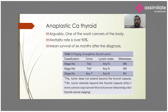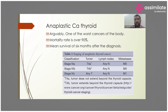Now we come to arguably one of the worst cancers in the body — anaplastic carcinoma of the thyroid has a mortality rate of over 90% and patients generally survive a maximum of six months to one year after diagnosis. It is so aggressive that there is no stage I, II, or III; there is only stage IV. Stage IVA is a tumor not extending beyond the thyroid, IVB is when surrounding structures are involved, and IVC with metastatic lesions is generally managed only with palliative chemotherapy.